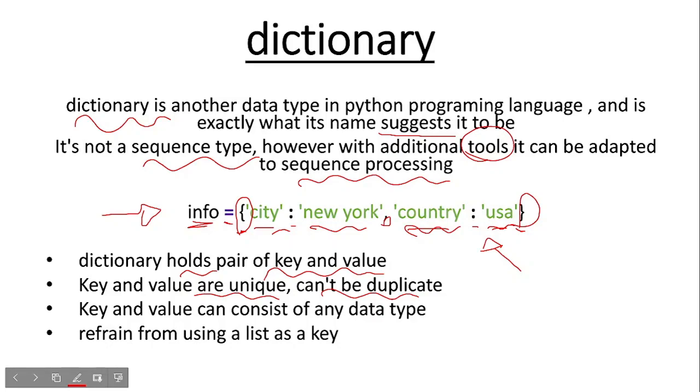Key and value can consist of any data type, so a key and value can be either list, string, integer, tuple, etc. Also, please refrain from using a list as a key inside our dictionary.